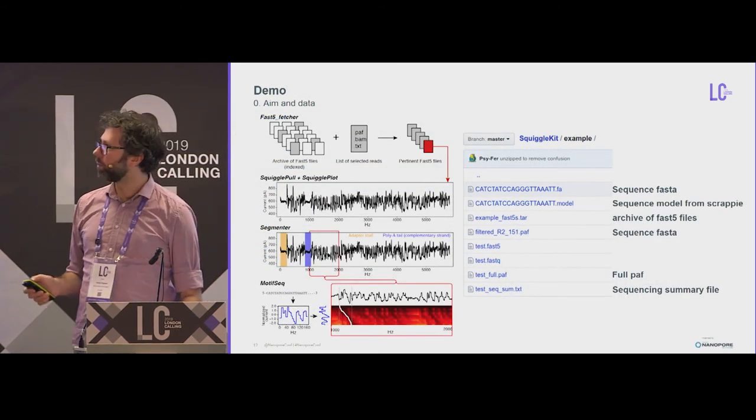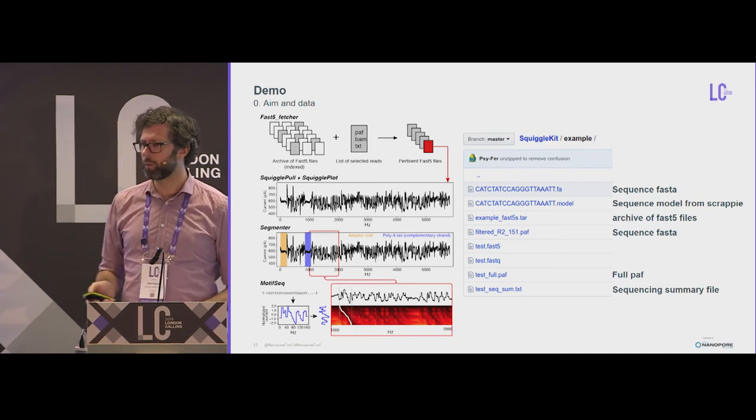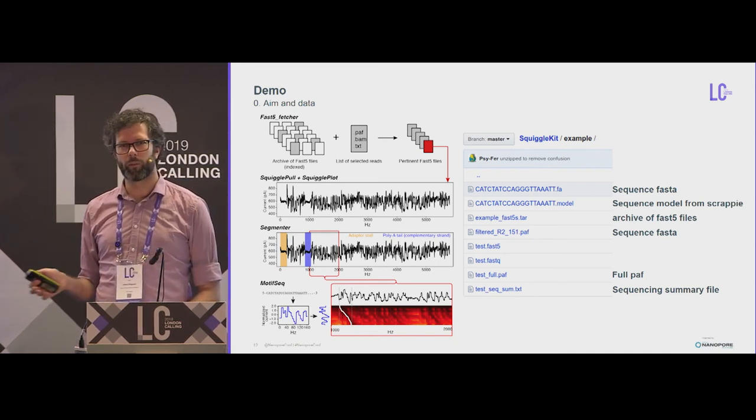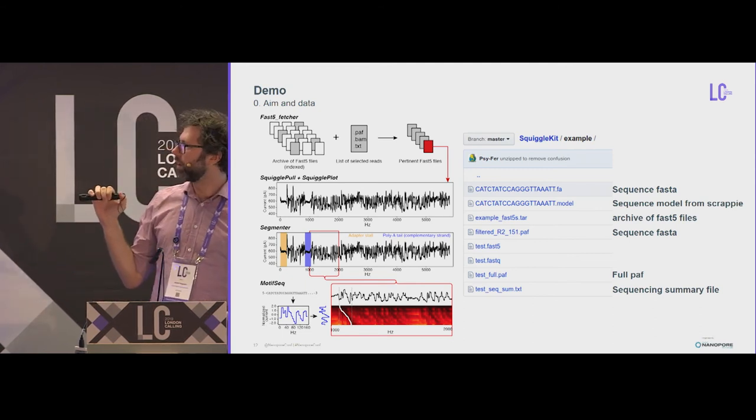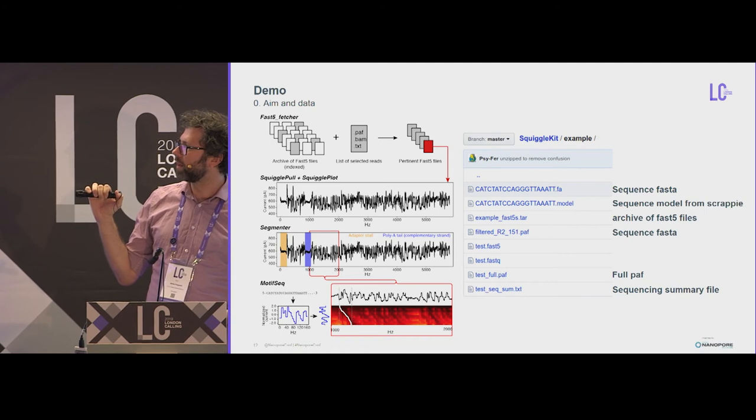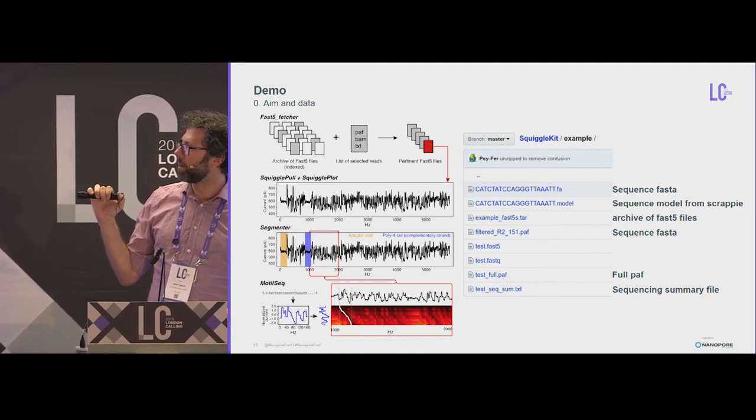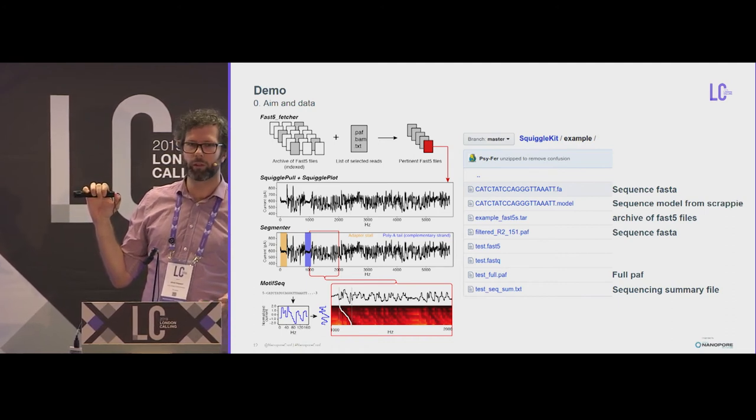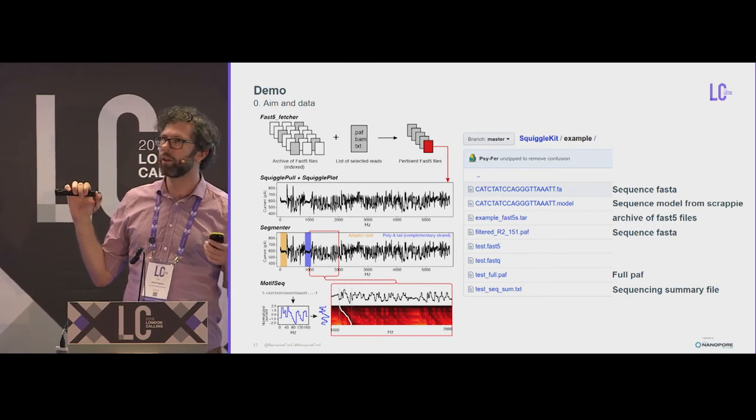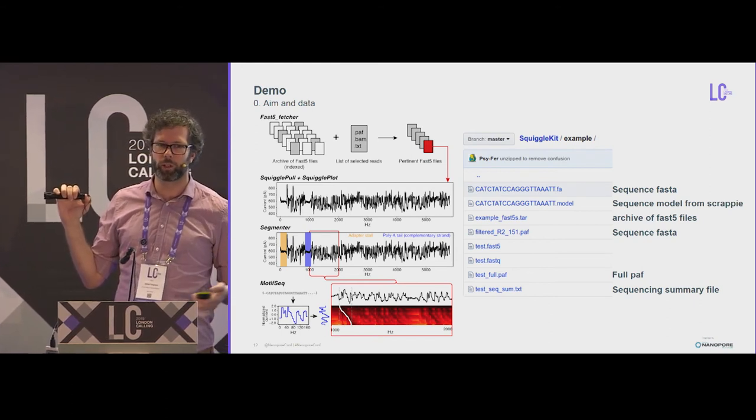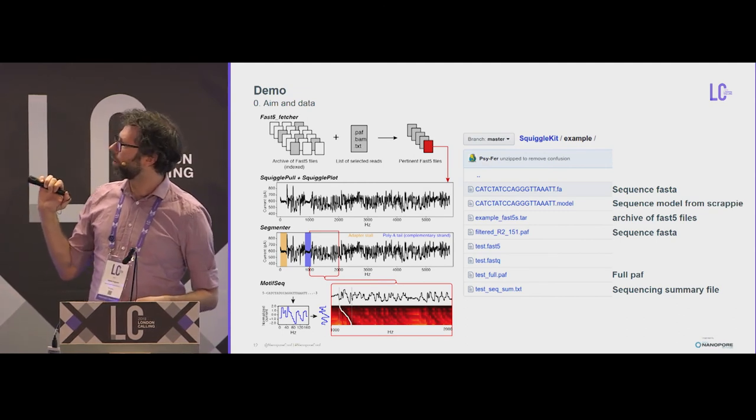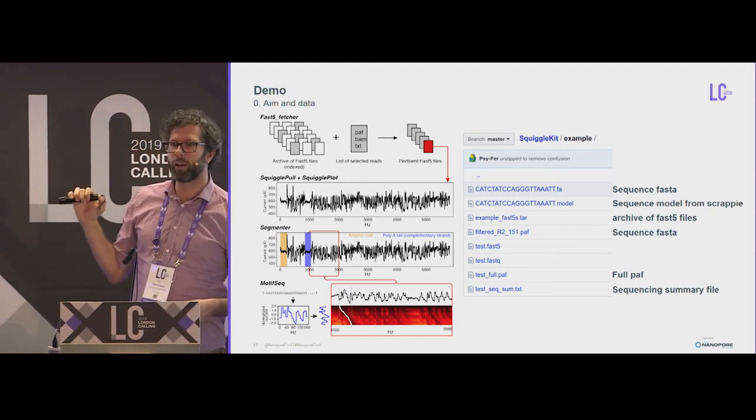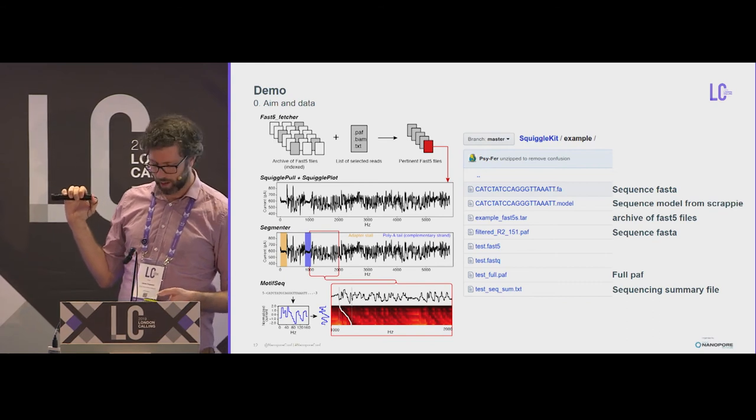So as a quick example, let's say, if anyone was at the talk from Martin Smith the other day, he showed this example of trying to find the three prime entity next to the poly T tail of a transcript that mapped to two regions, two different transcripts. And you want to find out which one's the real one. So on the GitHub, you can go to this example, and it has all the files you need to run through this example here.